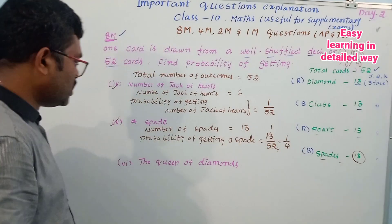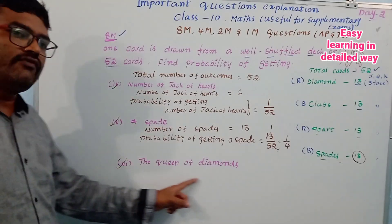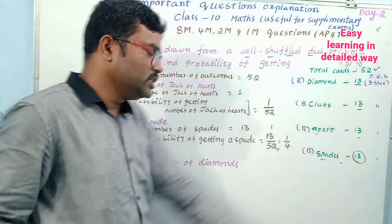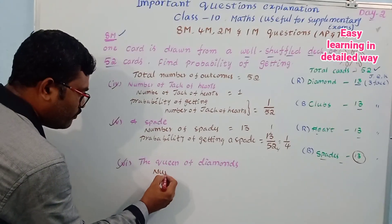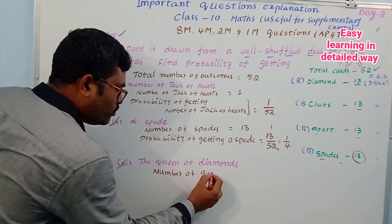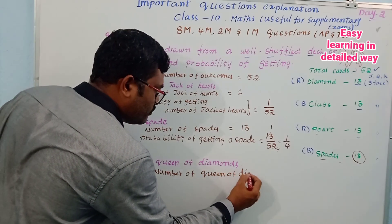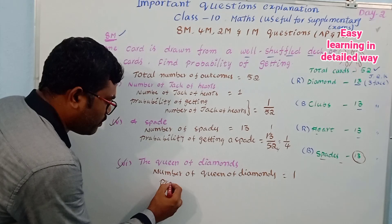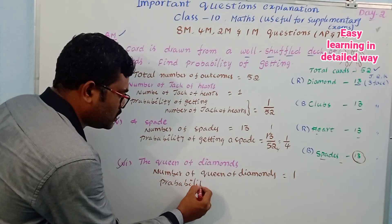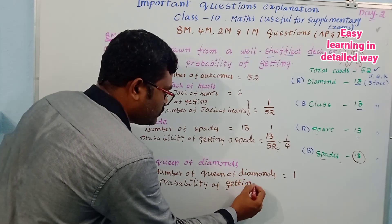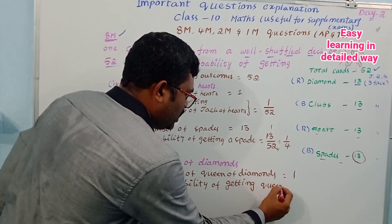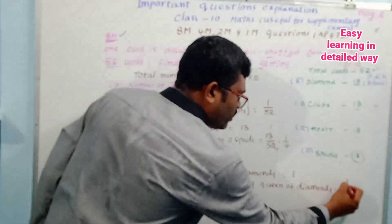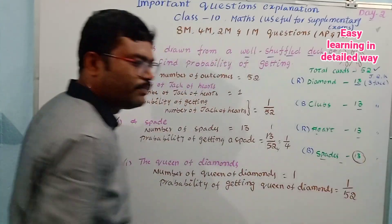So now see the last one, sixth one: the queen of diamonds. See, diamonds — there is only one queen, so number of queen of diamonds is 1. So probability of getting queen of diamonds is equal to favorable outcomes 1, total 52. That is the probability 1 by 52.